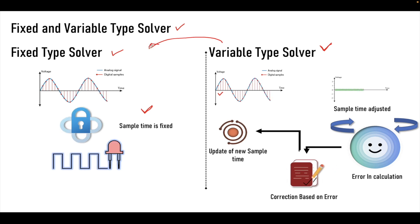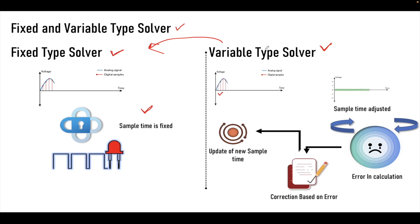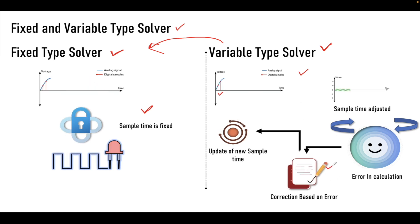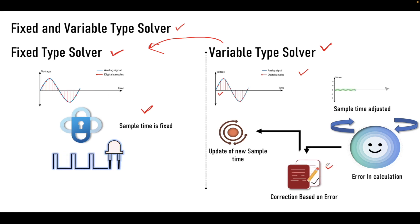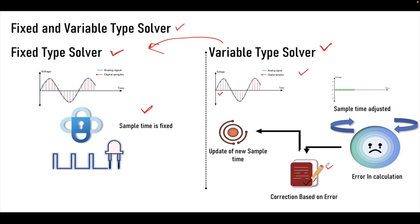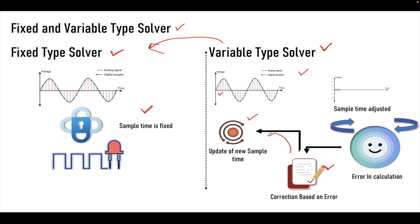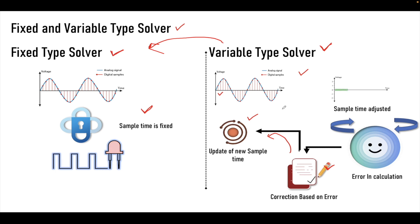If you want to generate the code, you can use the fixed type solver to generate the code. The main purpose of variable type solver is to analyze the model and also solve it properly using the error methods inside these solvers, which we will see in the next tutorial. Always the sample time will be updated based on the system dynamics, and an error will be calculated based on which the sample time is updated. The key summary: when using a fixed type solver you will be able to generate the code from your model, and if you are using a variable type solver the main purpose is to analyze the model.